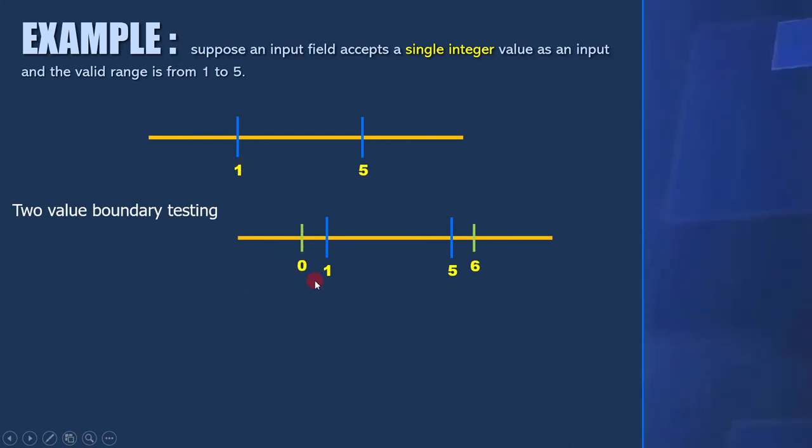For two-value boundary testing, you need to take two values outside the range. Here we have to take 0 and 6.